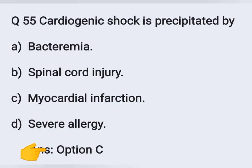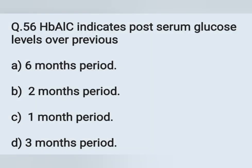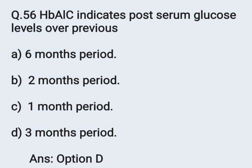Question number 56. HbA1c indicates the past serum glucose level over previous — Option A: 6-month period. Option B: 2-month period. Option C: 1-month period. Option D: 3-month period. HbA1c reflects the past serum glucose level over a period of 3 months — Option D is the correct answer.